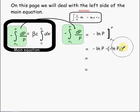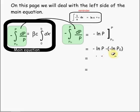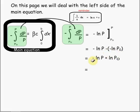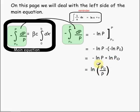Let's plug in what we know from the fundamental theorem of calculus over the range from P-naught to P. We have negative natural log of P minus the negative natural log of P-naught. We have a double negative here, so that is equal to the negative natural log of P plus the natural log of P-naught.